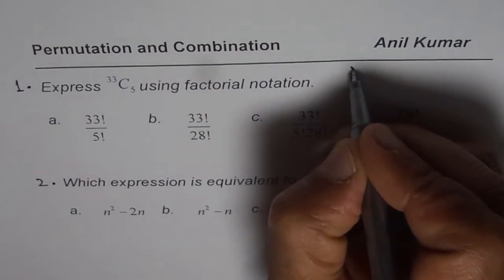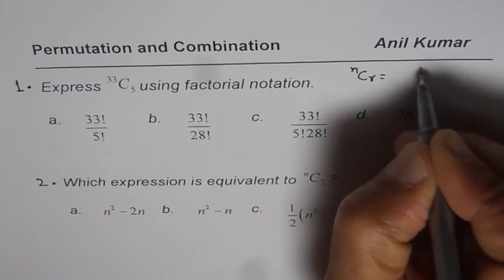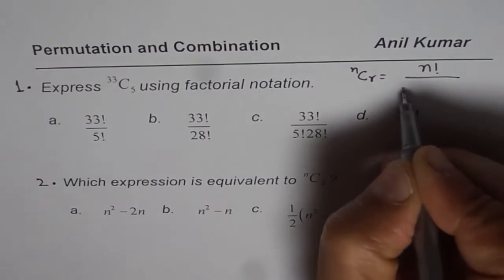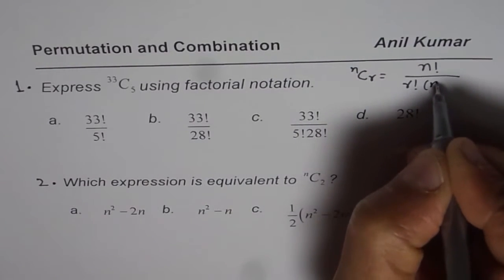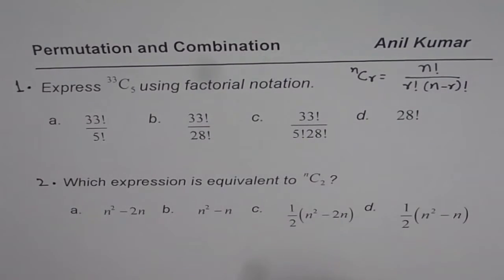Ncr, I hope you remember the formula. Ncr is n factorial divided by r factorial times n minus r factorial. So it is direct application of this formula.